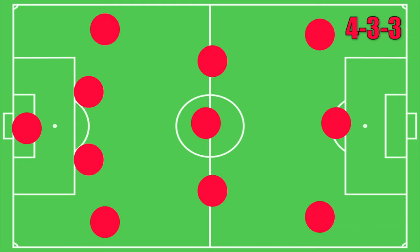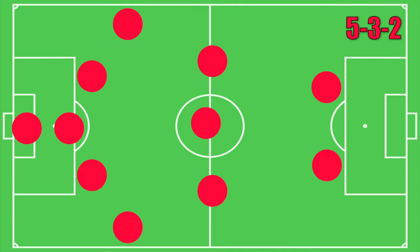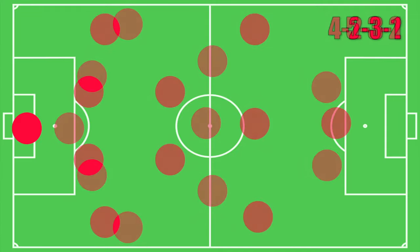Some other common formations include the 4-3-3. With this one, we took one of the midfielders and moved him or her up the field to become a forward. Three forwards in this formation provide some major firepower in the attack. We also have the 5-3-2, which is gaining more popularity in the modern game. With five defenders, it can be a very versatile lineup if you have the right personnel.